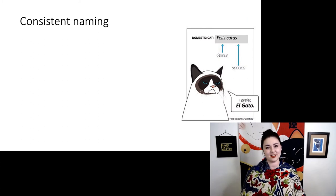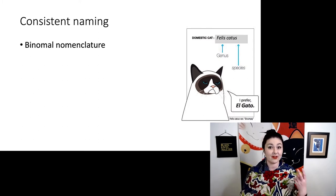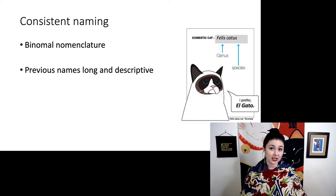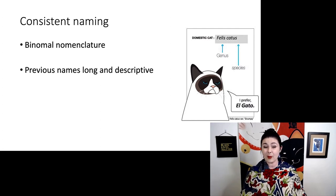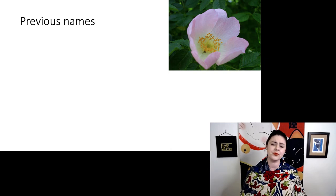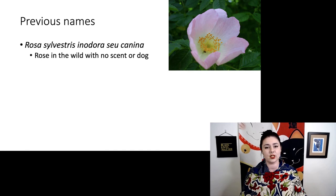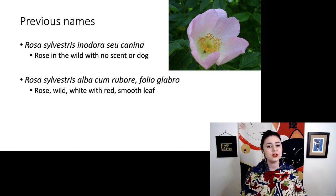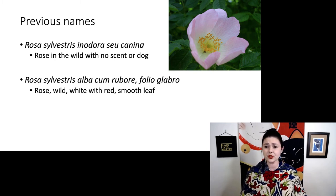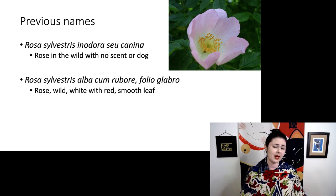The next feature we want to talk about is consistent naming — specifically, binomial nomenclature. We have these two different names. This is different because before Linnaeus, previous names were also just super long and descriptive, and different people would use different names, which was not helpful at all. For example, for this pretty little flower, one person called it Rosa silvestris inodoro seu canina — which means 'rose in the wild with no scent, or dog' (I have no idea what the dog refers to). But someone else named the same plant Rosa silvestra alba cum rubore folio glabro — 'rose, wild, white with red, and a smooth leaf.' These are both descriptions, which is helpful in some ways, but they're really long and different people had different names, so it's unclear whether we're actually talking about the same thing.